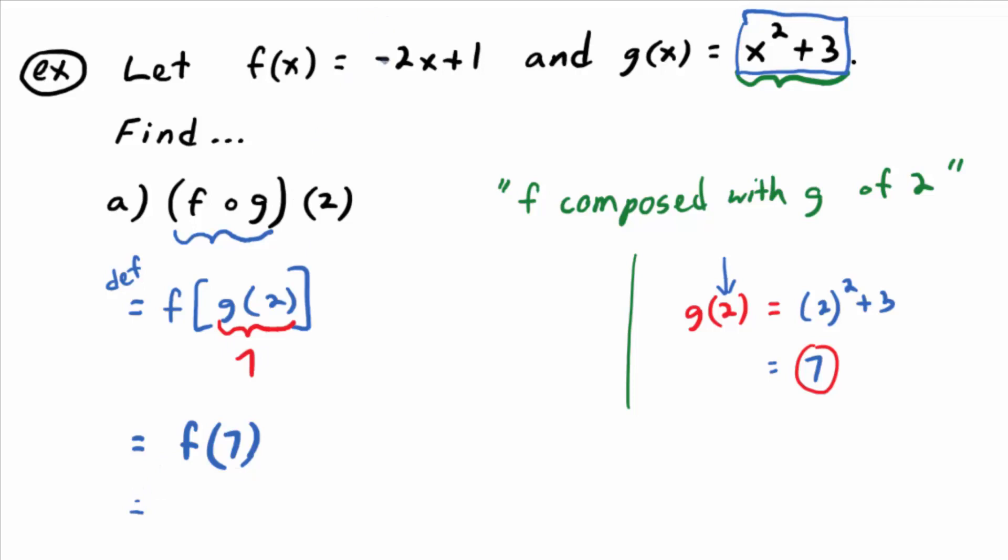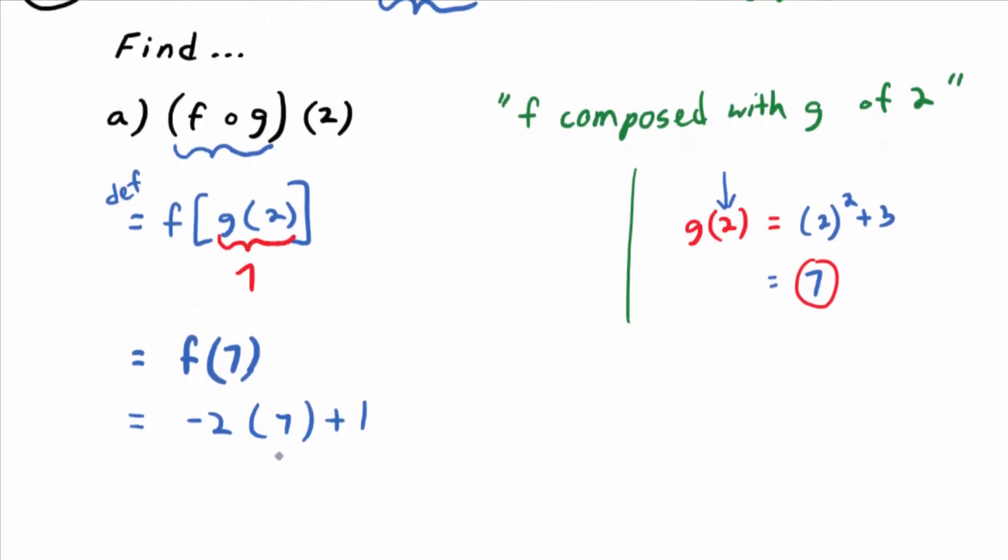What's f of 7? Well, I don't know. Find the formula for f and replace x with 7. That's what that notation means. So, negative 2 times 7 plus 1. Does everybody see what I did there? I replaced this x with the 7. So what is that going to be? Yeah, it's negative 14 plus 1, which is negative 13.